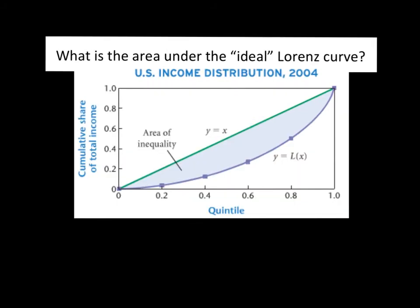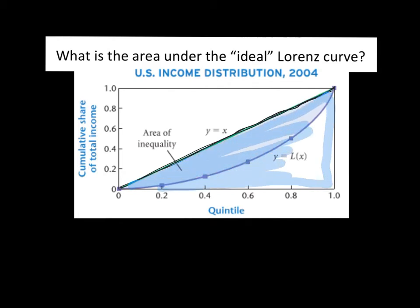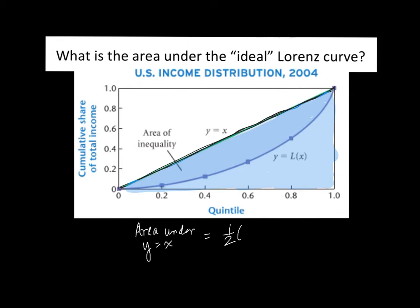Next, we find the area under the ideal — the perfectly equal income distribution, which is the line y = x. The area under this curve from 0 to 1 is just a triangle, so we don't need calculus. Using the basic geometry formula: area of a triangle = one-half times base times height. The base goes from 0 to 1, so it equals 1, and the height also goes from 0 to 1. So that area is one-half square units.